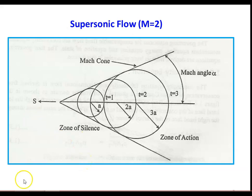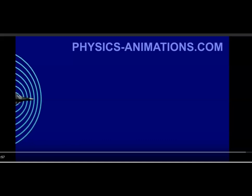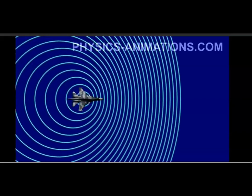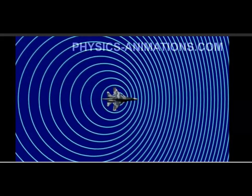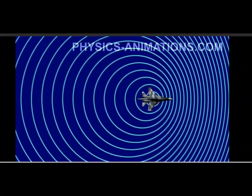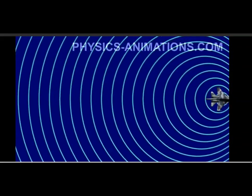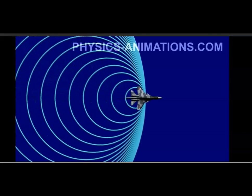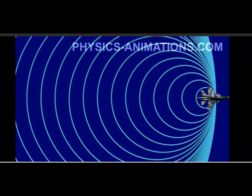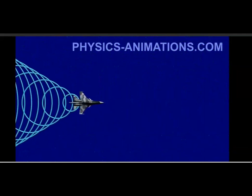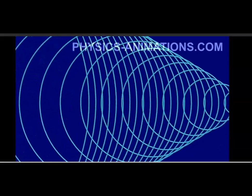To understand the concept better, a YouTube clip is shown. The flight is moving slowly with sound waves shown as blue lines — this is subsonic flow, where sound waves move faster than the flight, so the Mach number is less than 1. For sonic condition, the flight moves with speed C equal to A, so the sound waves and flight move at the same speed. For supersonic flight, the sound waves are behind — the flight is moving ahead of the sound waves.